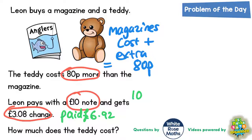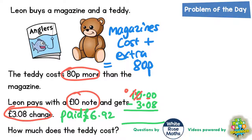From £10 we need to take away £3.08. £10 is the same as 10.00 because there are no pence. So doing the column subtraction: 0 take away 8 we can't do, so we go to the next column to borrow, but that's a 0. The next column is also 0. So we borrow from the 1, which becomes 0, making the next column 10. Borrow from the 10, making it 9 and the next 0 into 10. Borrow again, making it 9 and the last 0 into 10. So: 10 take away 8 is 2, 9 take away 0 is 9, 9 take away 3 is 6. That gives us £6.92.